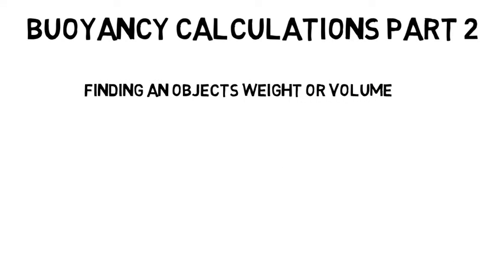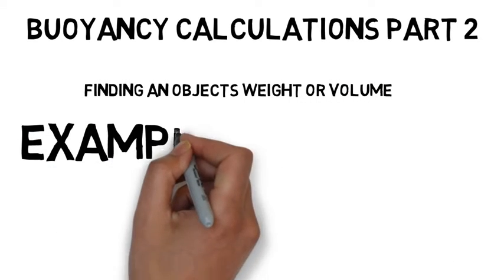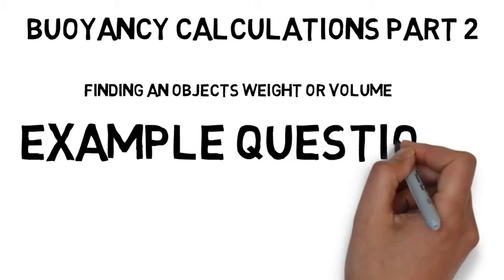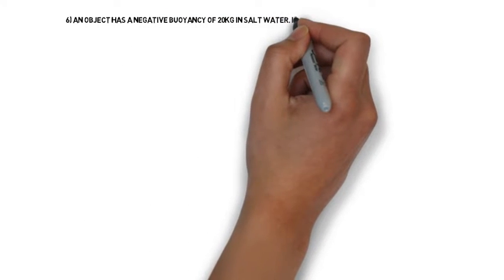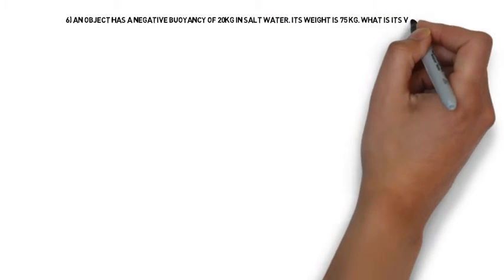This is example question six. This question is asking us for the volume of an object. We've got all the information we need given in the question. We just need to make sense of it by using the diagram.